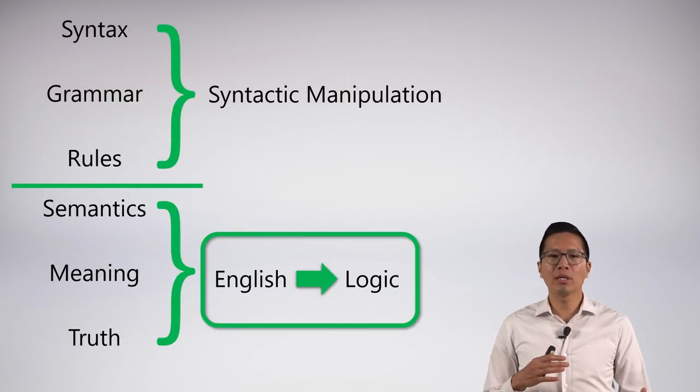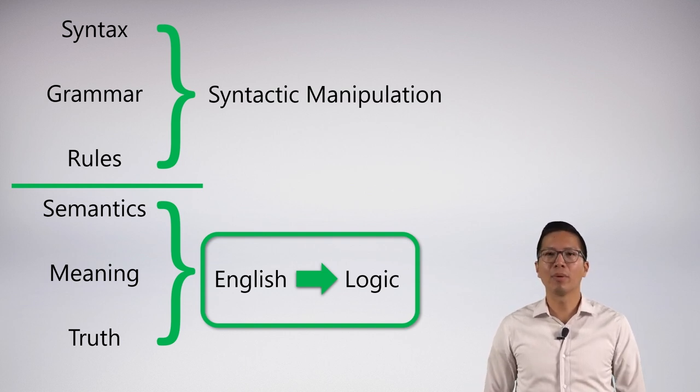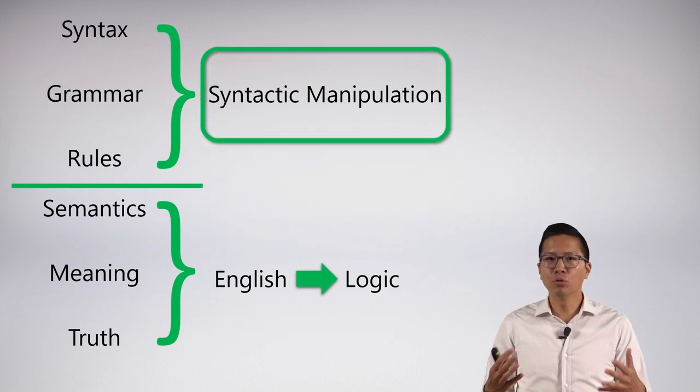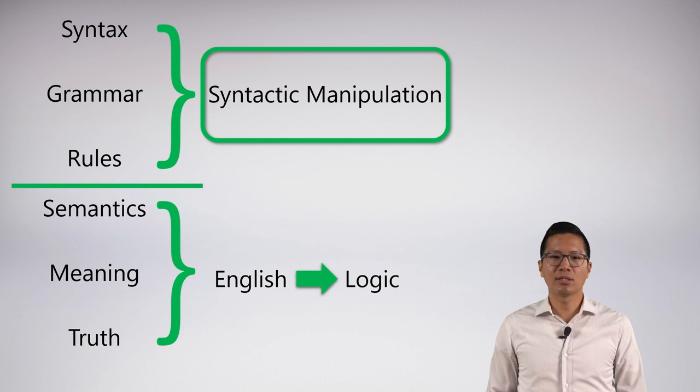We're trapped in truth tables. We need to develop a more powerful system of proving that things have certain logical properties. This system will get away from truth tables and focus purely on syntax, grammar, and rules that preserve truth. This is essentially a purely syntactical manipulation apparatus. This will take us to our next unit: derivations.